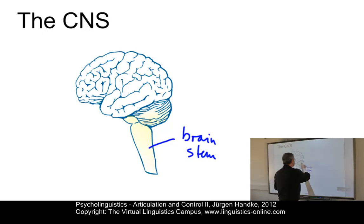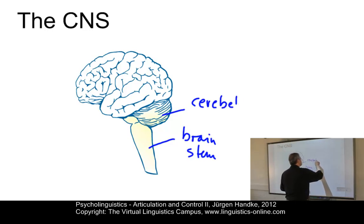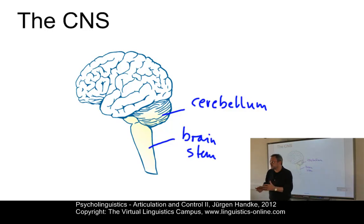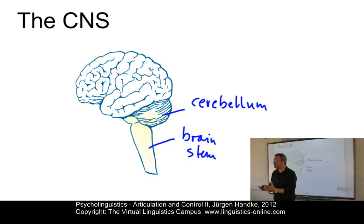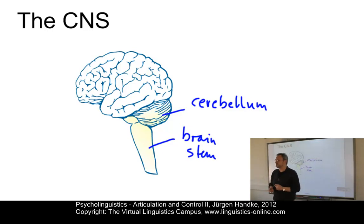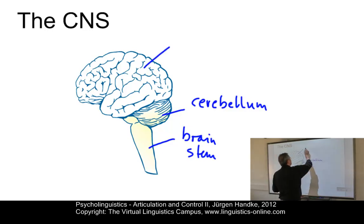The second part is the cerebellum. The cerebellum is important for coordinating voluntary movements — for example, walking, posture, speech — and for learning motor-skilled behaviors. And then, of course, we have the main part, which is referred to as the cerebrum.